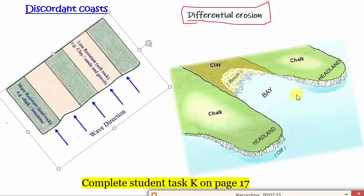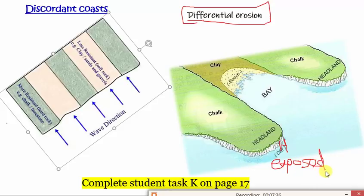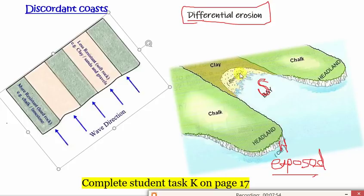The important thing to note about headlands and bays is the energy levels between the two. Headlands tend to be a high energy environment — they're very exposed. They stick out to sea. Your bays are much more sheltered. And that's why, in this example, we see a bayhead beach, because deposition is the dominant process in a bay, whereas headlands are more exposed and erosion is a more dominant process.